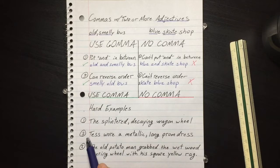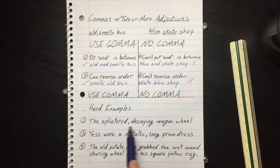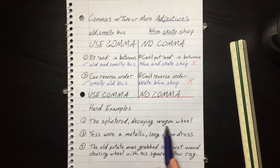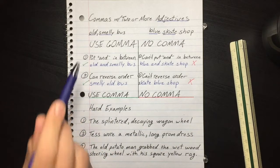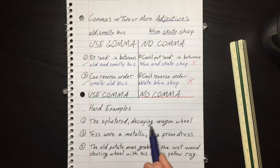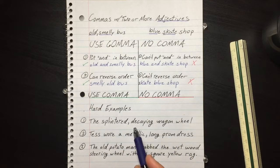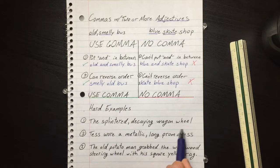Here's some harder examples with more adjectives. The splintered decaying wagon wheel - three adjectives describe the wheel. Splintered decaying? Yeah, you can put an 'and' in between them. The splintered and decaying wagon wheel. You can also change the order. The decaying splintered wagon wheel.